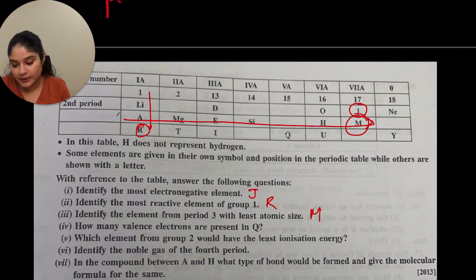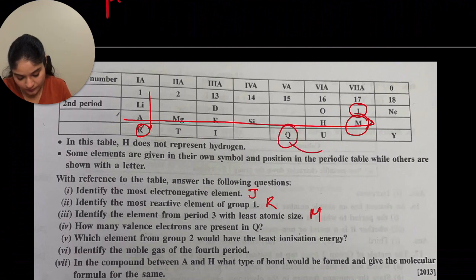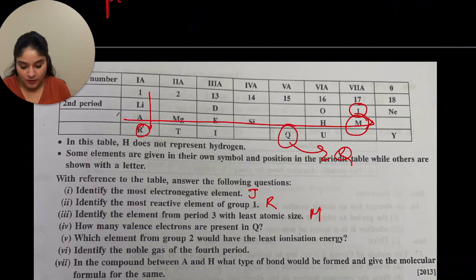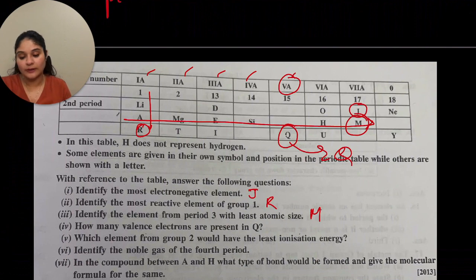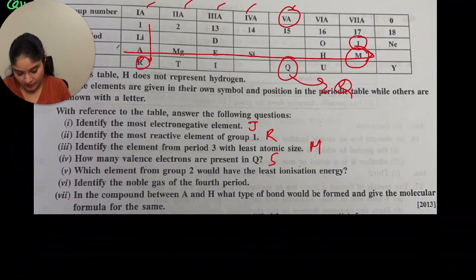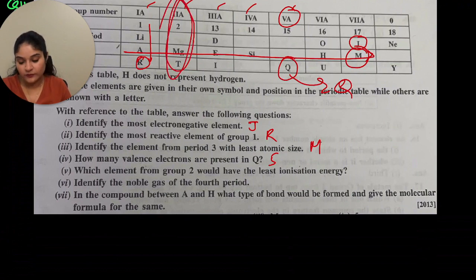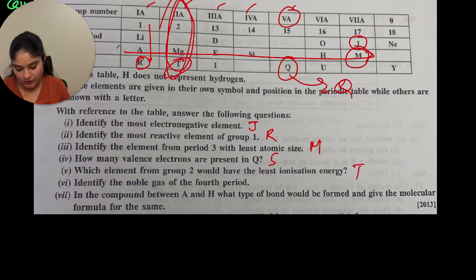How many valence electrons are present in Q? Valence electrons can be identified by the group number. Q is in group 5A, so it will have 5 valence electrons. Which element from group 2 would have the least ionization energy? As you go down group 2, ionization energy decreases, so T will have the least ionization energy.